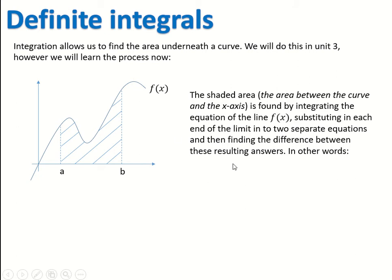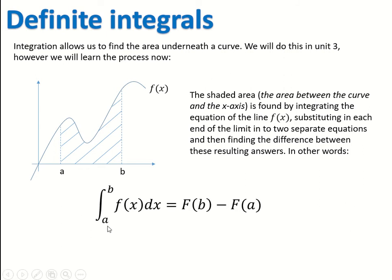Once we've done the integration we get an equation, and then we substitute in each value — a and b — into the same equation, giving two different versions of it. We find the difference between those resulting answers, and that gives us the area under the curve. The two values come in at the top and bottom of our integrand. When you're wanting a definite integral, you'll see a number at the top and bottom, relating to the enclosed interval of the area we're trying to find.